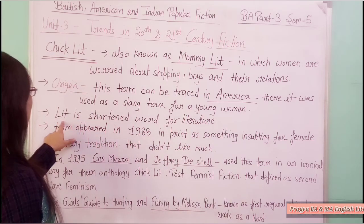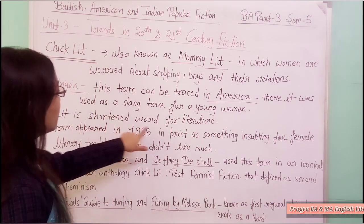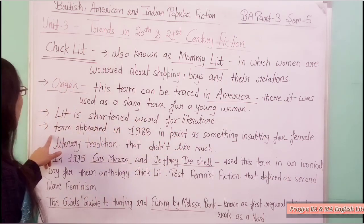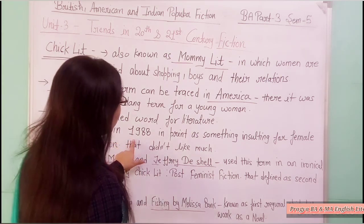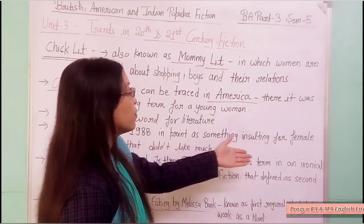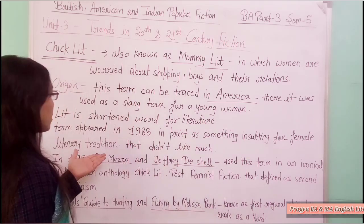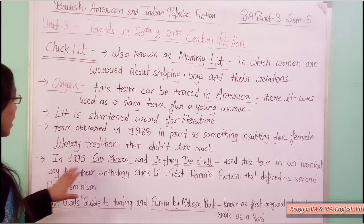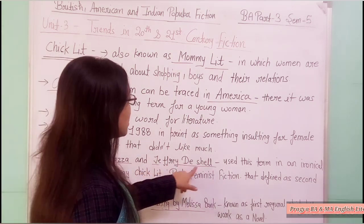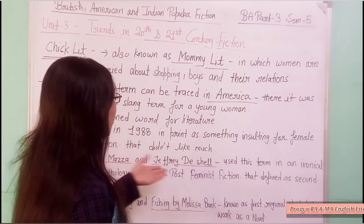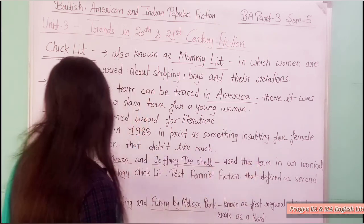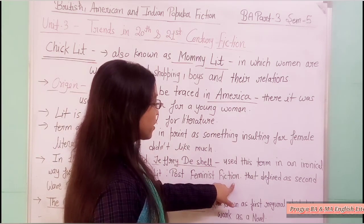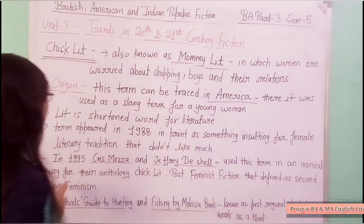The word 'lit' is a shortened word for literature. This term appeared in print in 1988 as something insulting for the female literary tradition that was not well regarded. Then in 1995, Chris Mazza and Jeffrey DeShell used this term in an ironical way for their anthology Chick Lit: Post-Feminist Fiction, which defined it in relation to second-wave feminism.